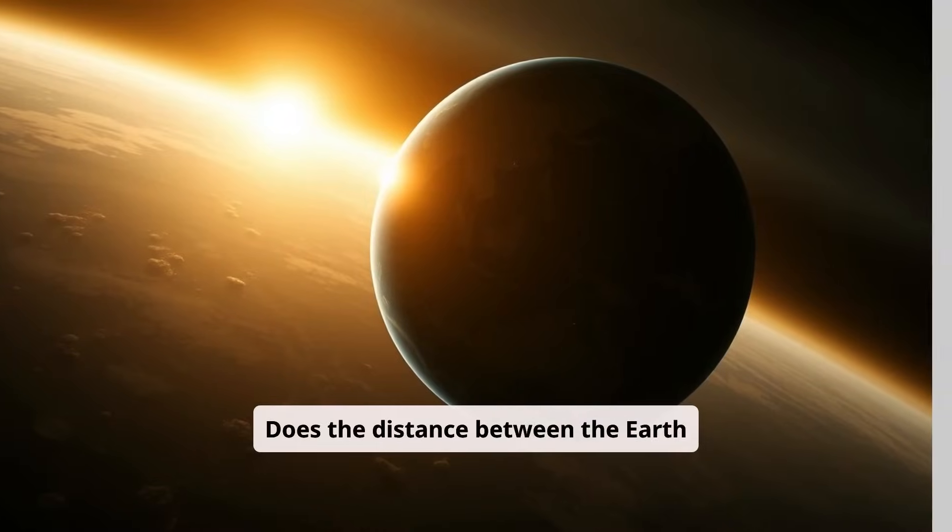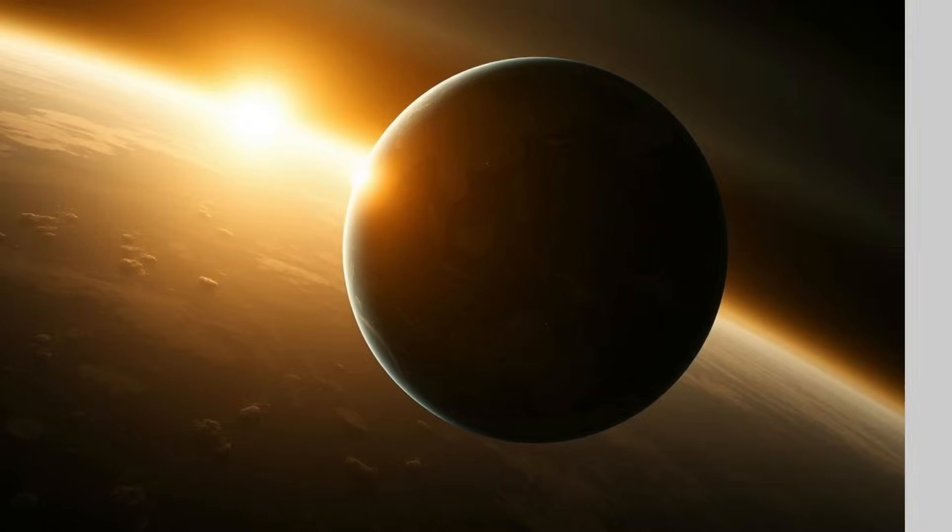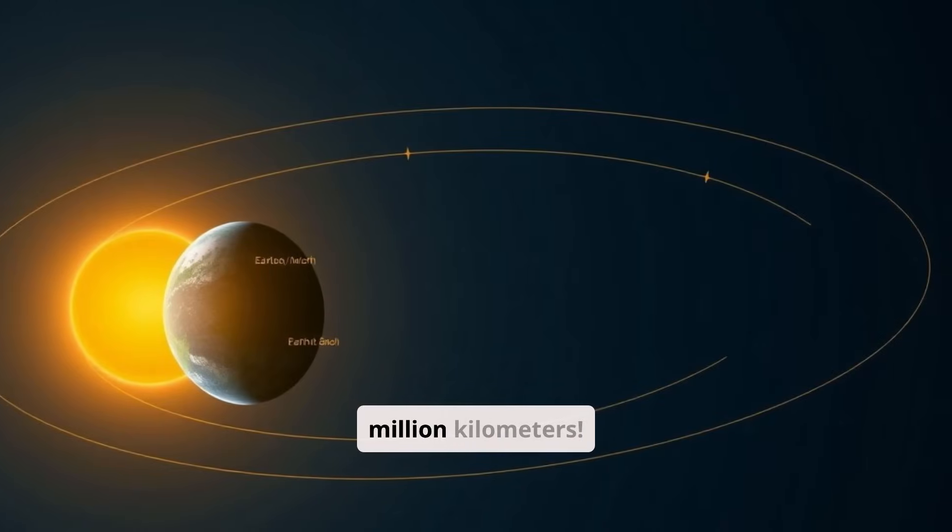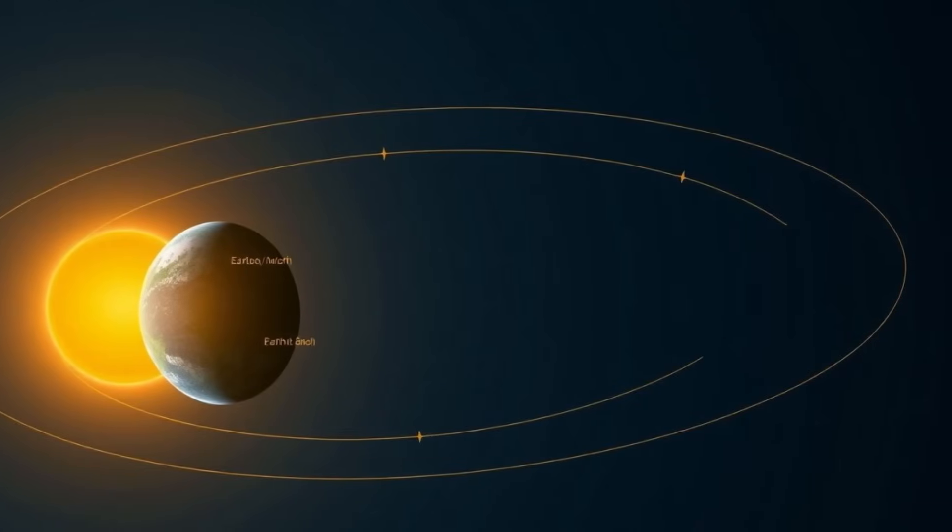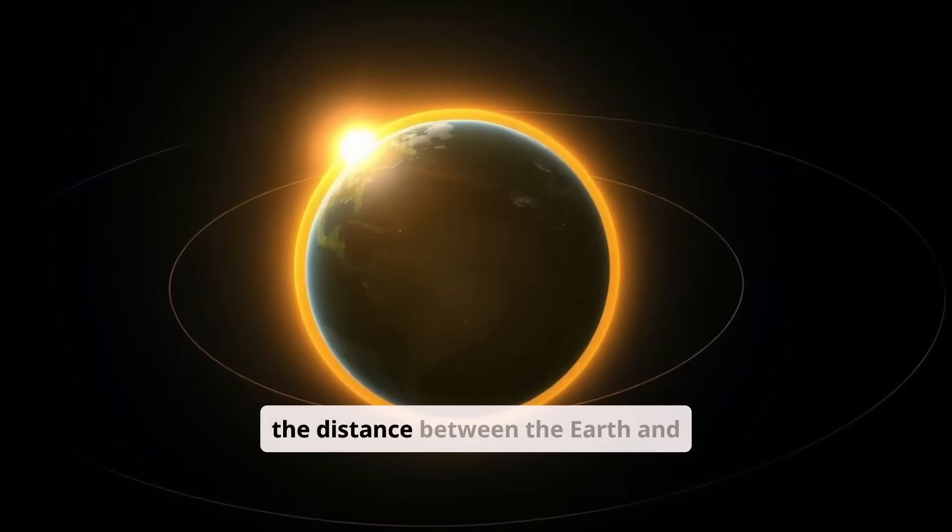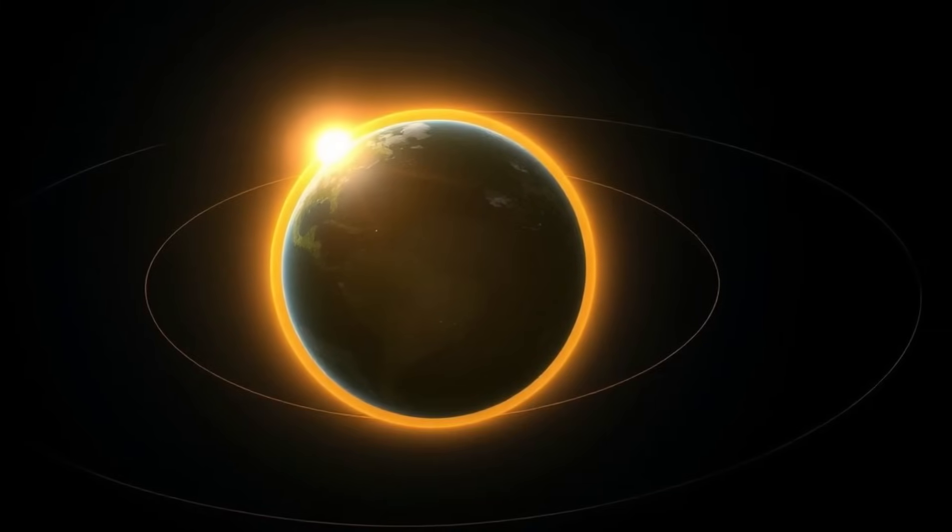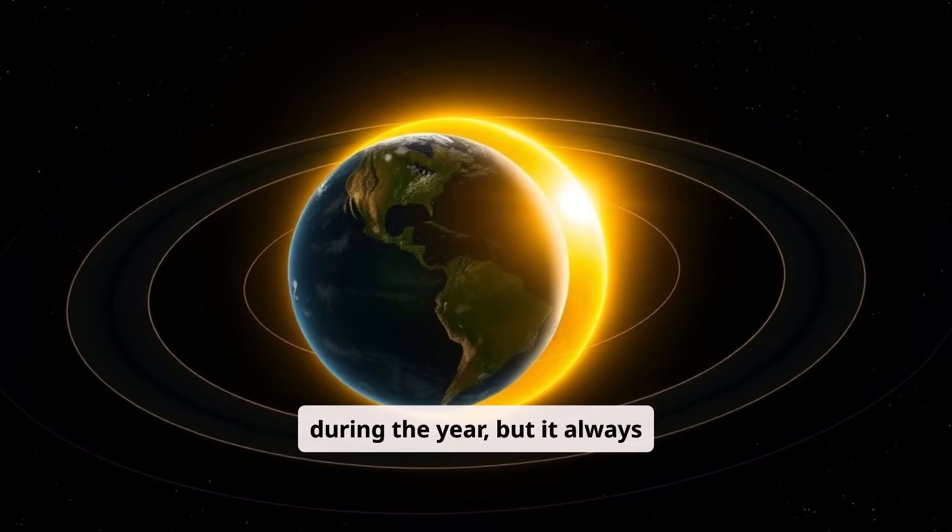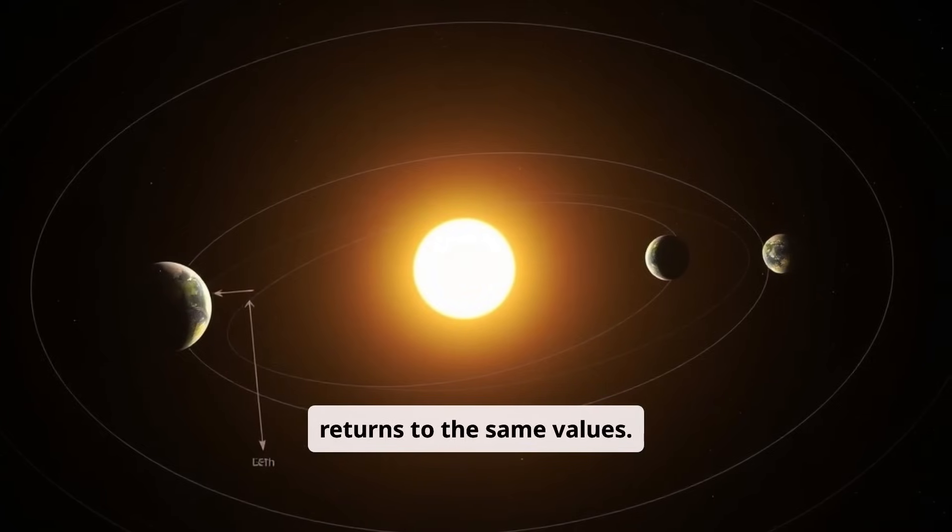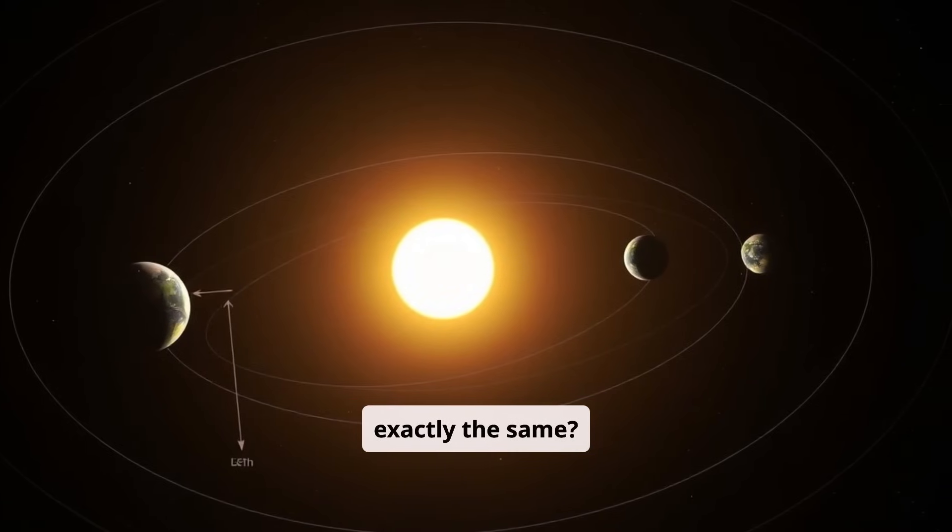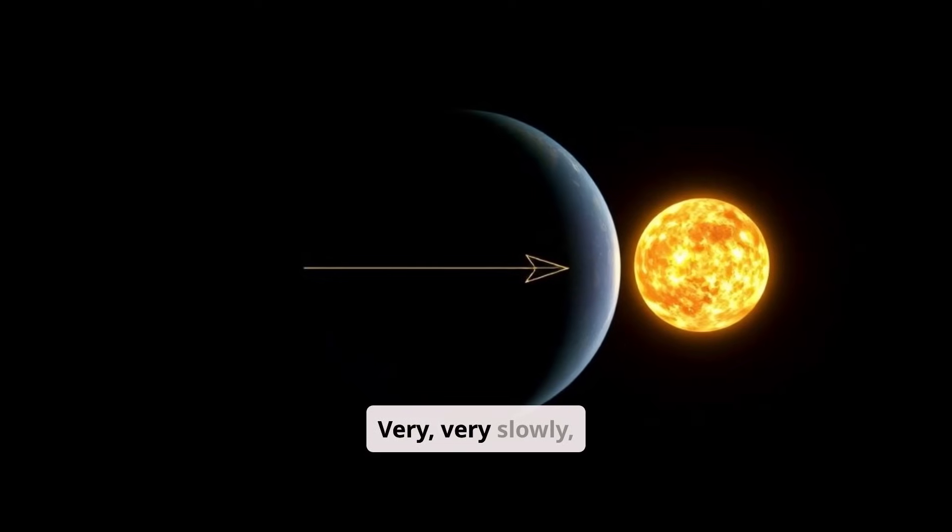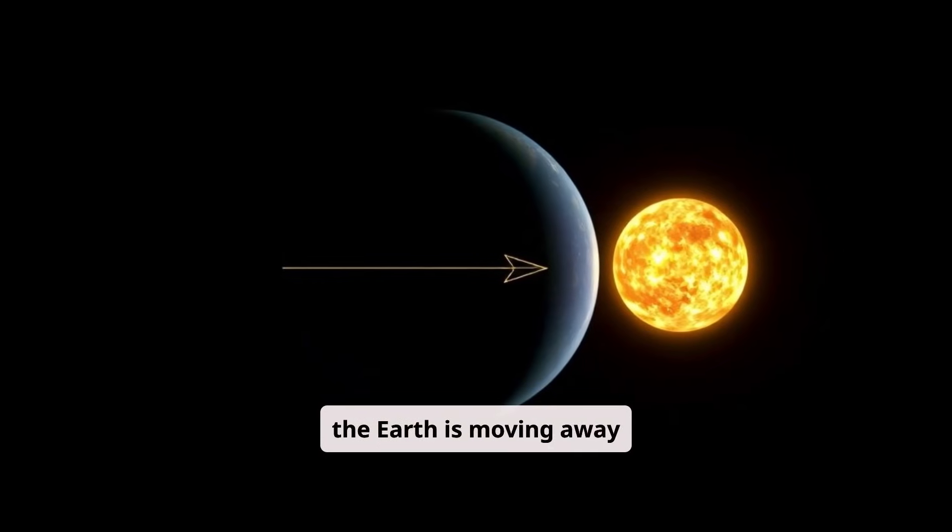Does the distance between the Earth and the Sun change over time? It's quite a journey, 150 million kilometers. Due to the elliptical orbit, the distance between the Earth and the Sun changes slightly during the year, but it always returns to the same values. Or are they not exactly the same? Very, very slowly, the Earth is moving away from the Sun.